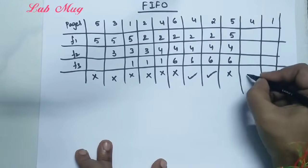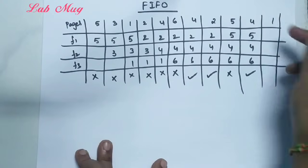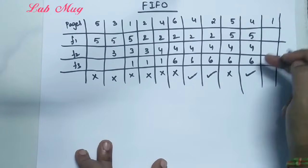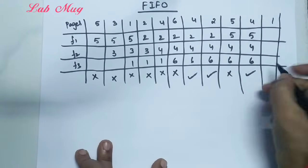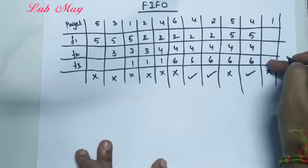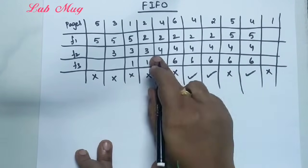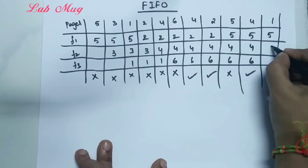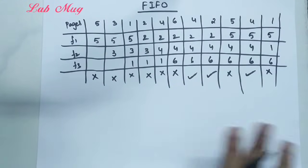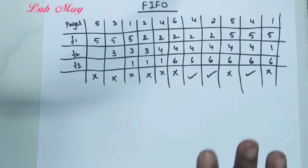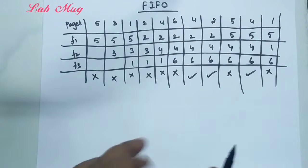Next is page 4. Page 4 is already in main memory — that is a hit, no issues. Frames are 5, 4, and 6. Next is page 1. Page 1 is not in main memory — that is a page fault. Using FIFO, page 4 has been there longest, so 4 is replaced with 1. Now frames are 5, 1, and 6.